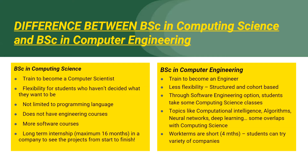The computer engineering or software engineering program trains you to become an engineer. The program is much more structured and cohort-based, so there is less flexibility in exploring different fields. But through the software engineering option, you can take some computing science classes. There are various topics that overlap with computing science, like computational intelligence, neural network, deep learning, and much more. The co-op program offers shorter work-term opportunities, but this provides an opportunity for students to gain experience in a variety of companies.